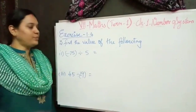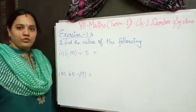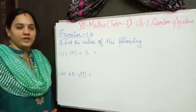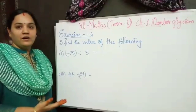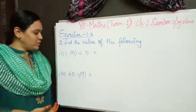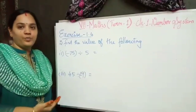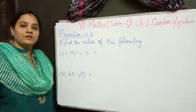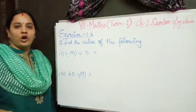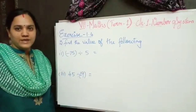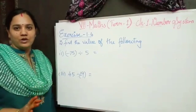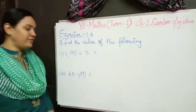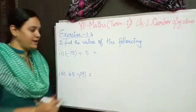Now the third problem is to find the value of the following. I will be doing the first and third options; you have to try the second and fourth options on your own using the same method. So now, minus 75 divided by 5.